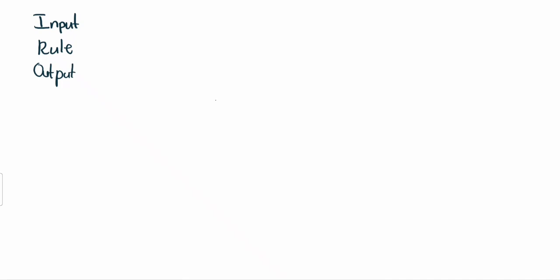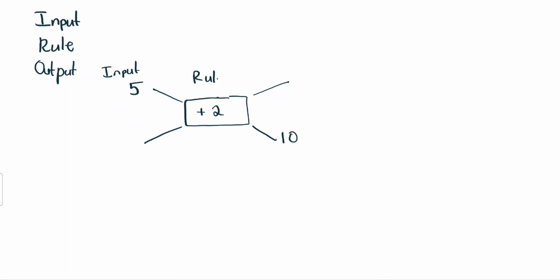Now I'm going to quickly draw a flow diagram for you. It would have to look something like this. Now this is how a flow diagram would have to work. So here's the input side, this is the rule, and this is the output.